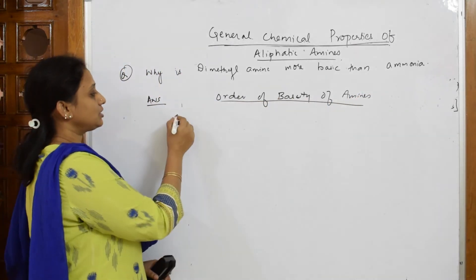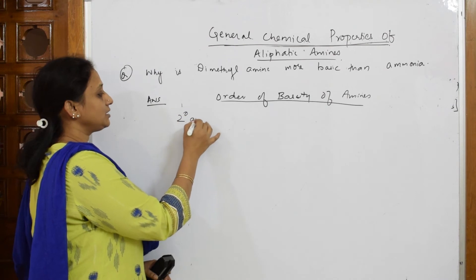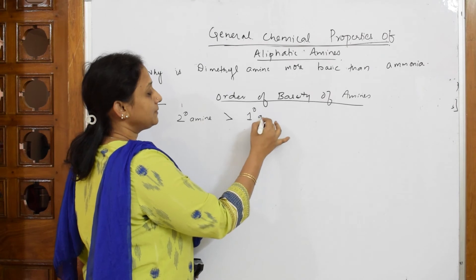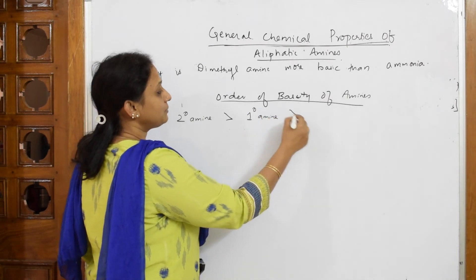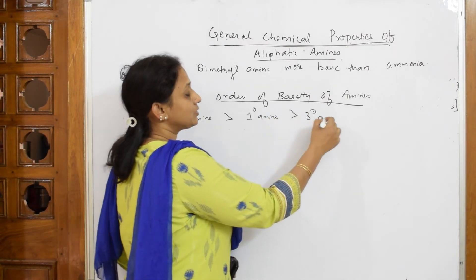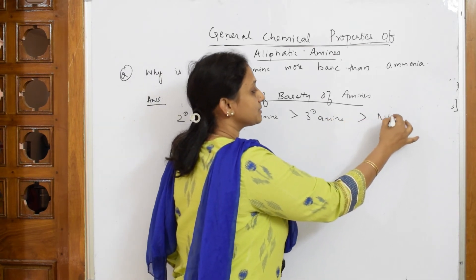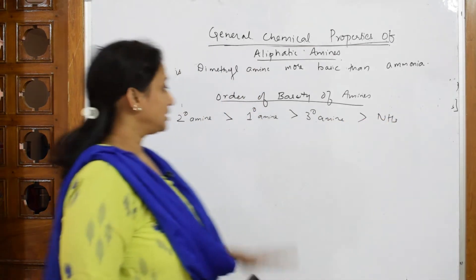Always remember your secondary amine is a stronger base compared to primary amine. Primary amine is a stronger base compared to tertiary amine. Tertiary amine is a stronger base compared to ammonia. That's it.